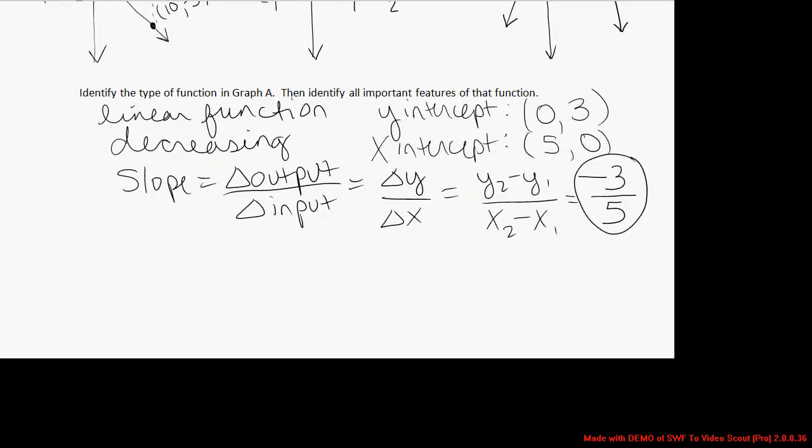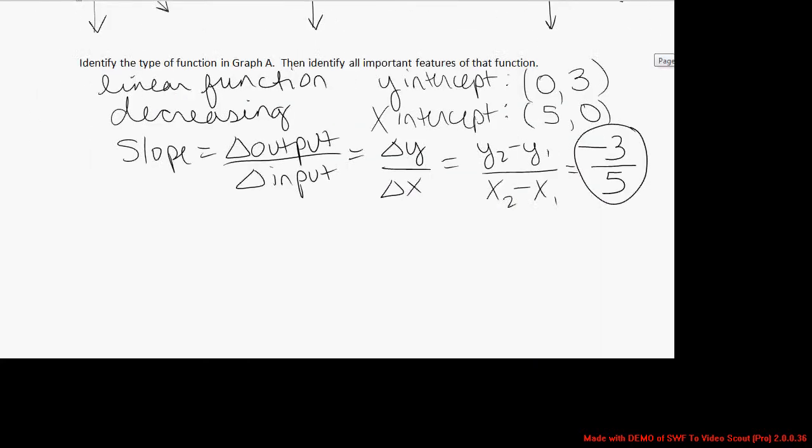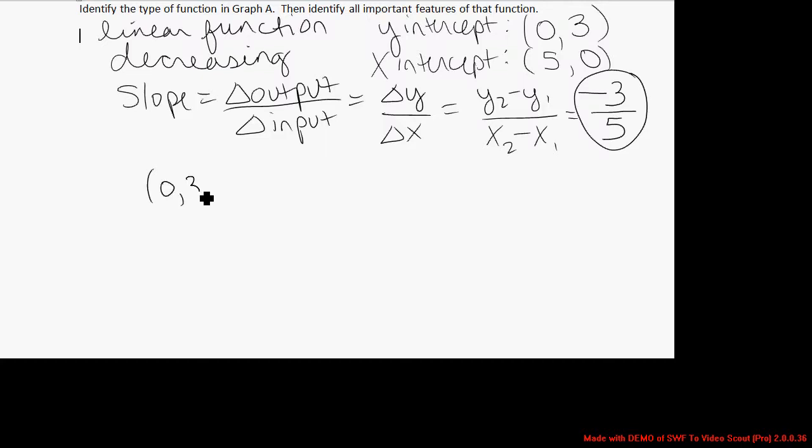You can find that slope, if you like, by using any two points on the graph. For example, you could travel from the point (0,3) and travel over to the point (5,0). You could call this first point point 1 and the second point point 2. And the slope is y2 minus y1 over x2 minus x1. So in point 2, we have an x-value and a y-value. Since it's point 2, I'll call this x2. It's the x-value of point 2. And that's y2. It's the y-value of point 2.